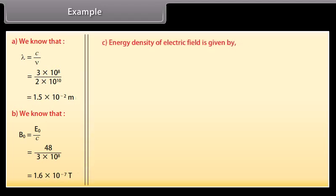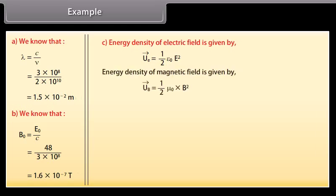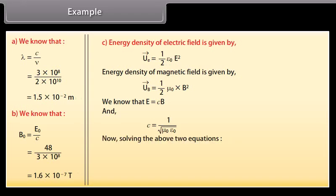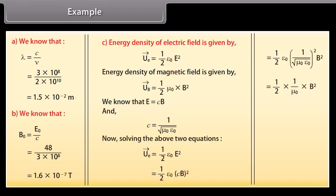Energy density of electric field is given by half epsilon not E square. Energy density of magnetic field is given by half mu not B square. We know that E is equal to CB and C is equal to 1 upon under root mu not epsilon not. On solving the above two equations, we get average energy density of electric field equals the average energy density of magnetic field.